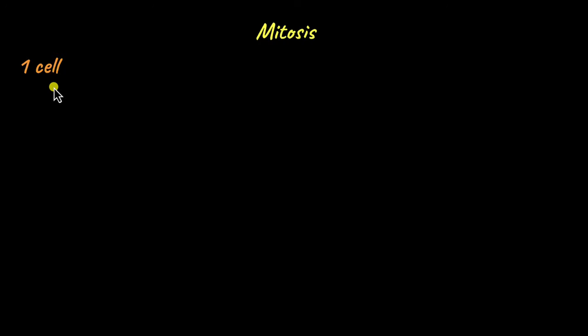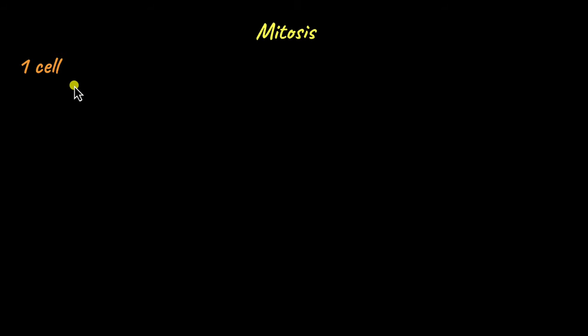Imagine you're a single white blood cell. You realize that there is an infection in the body — say a bacterial infection — and you need to fight off that bacterial infection. Obviously, you cannot do it alone. You literally need an army of more white blood cells to fight off the infection. So how will you go about building that army?